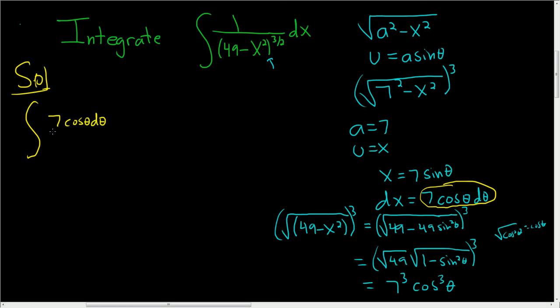And in the denominator, we have this creature here, 7 cubed, cosine cubed. So 7 cubed, cosine cubed, and then that's it.